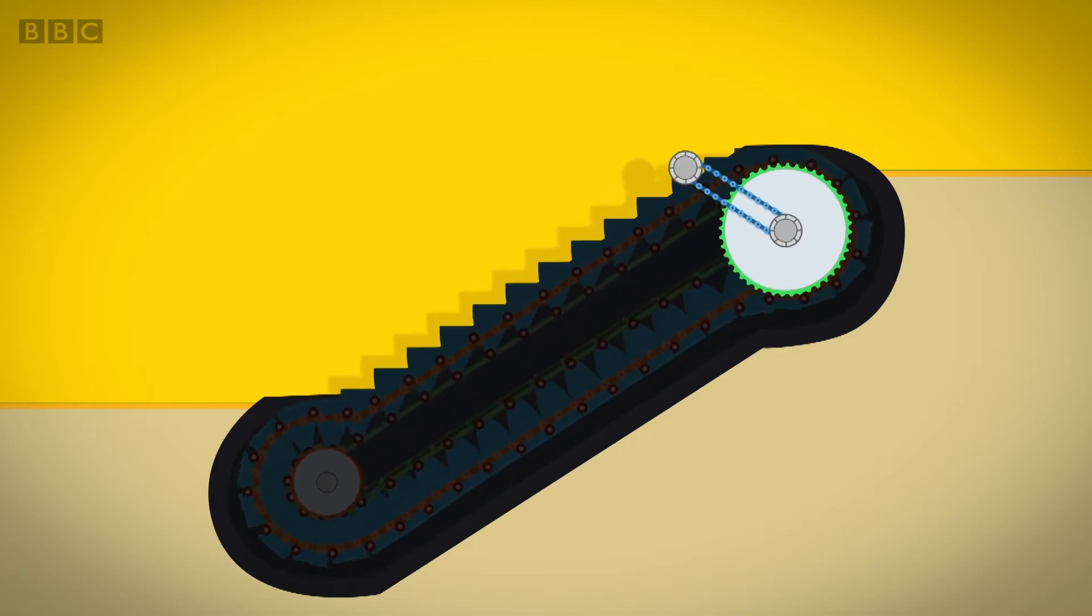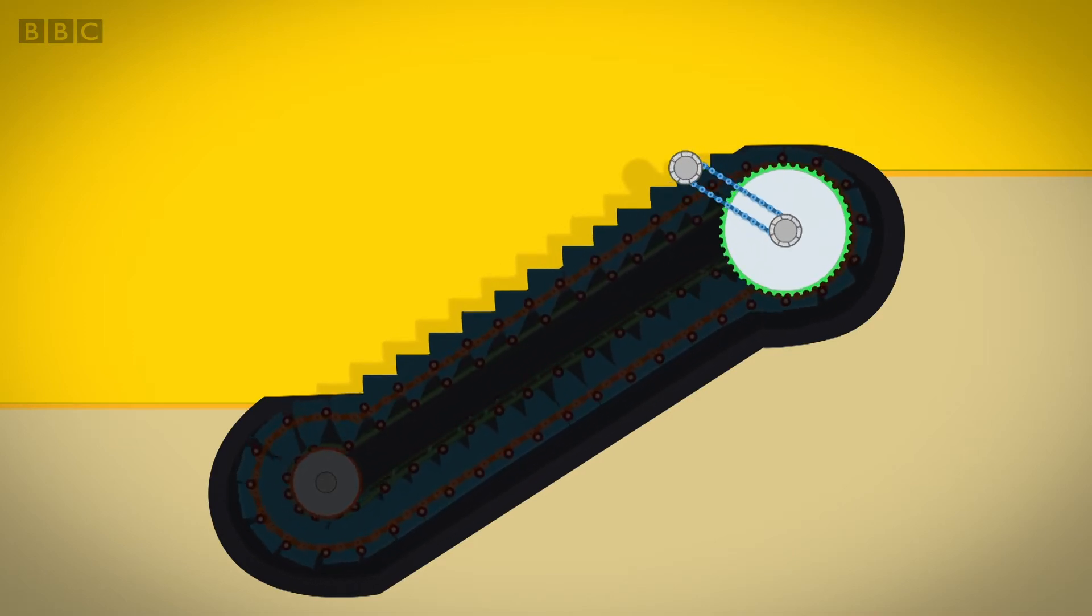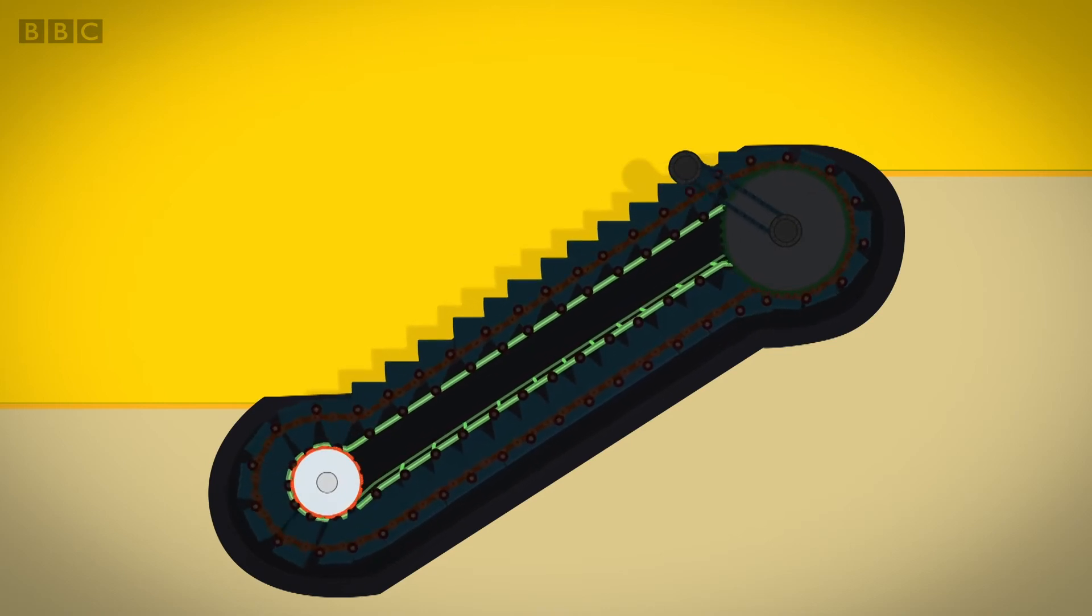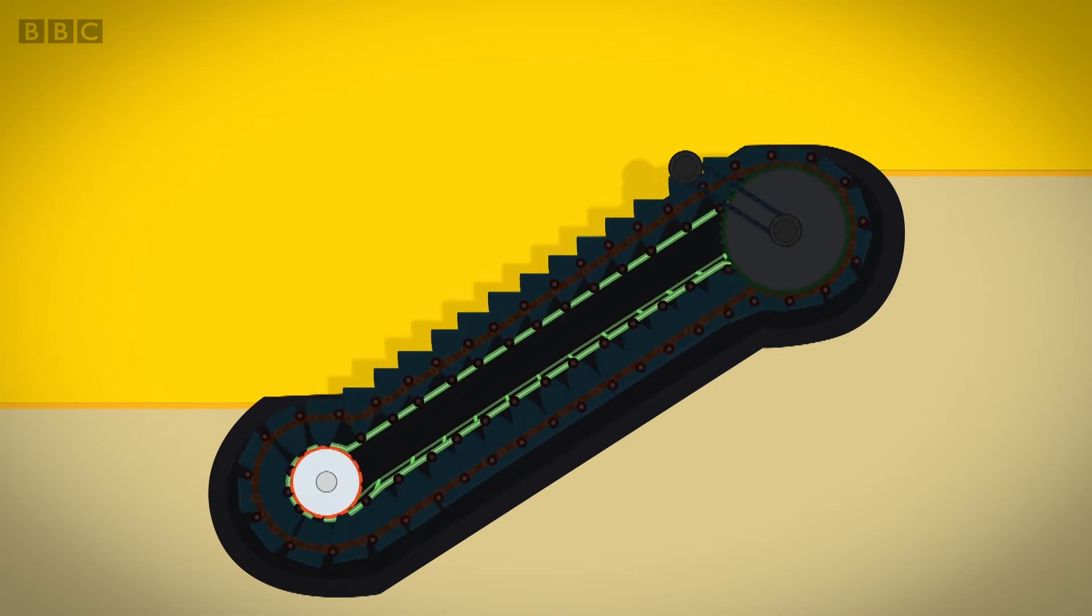The gears at the bottom run along a track like a train. The gears have teeth on them, and when they turn they pull the loop of stairs around with them.